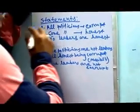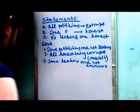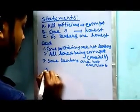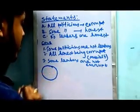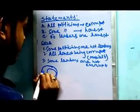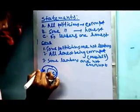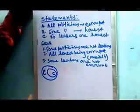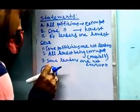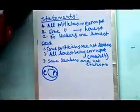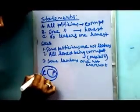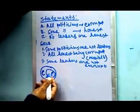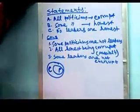Let's draw the basic diagram. Statement A tells us: all politicians are corrupt. This circle denotes all politicians, and this larger circle denotes corrupt. Since the politicians circle is within the corrupt circle, we can state that all politicians are corrupt. Statement A is drawn here.